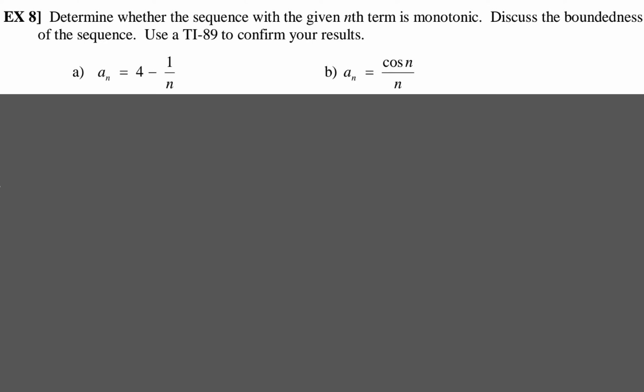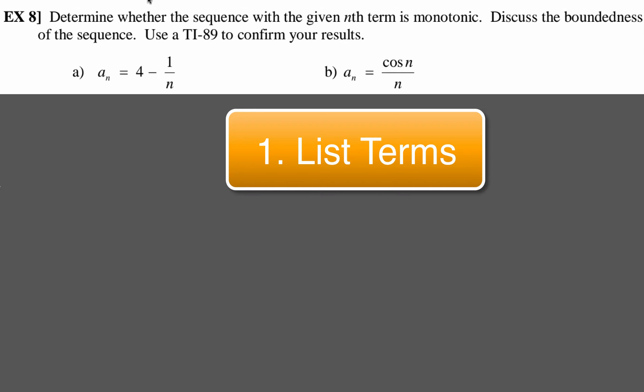All right, now for this example, we've got to figure out whether the sequence is monotonic. Determine the boundedness of the sequence using a graphing calculator to confirm our results. So with this, simply what you're going to do is just list the terms, and that's going to be the first thing that we'll do.